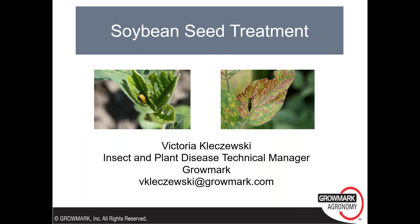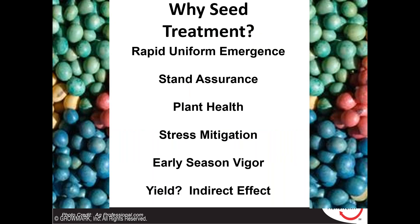Thank you. Good morning, everyone. For the next 45 minutes, we're going to be reviewing the main insect pests and pathogens that affect soybeans early in the season and are the main target of seed treatment products. Some of the main objectives of using a seed treatment is to promote rapid and uniform emergence, promote uniform stands, plant health, to mitigate stress early on — stress imposed by early insects and pathogens, but also environmental conditions — and also to promote early season vigor that can potentially translate into better yields at harvest.